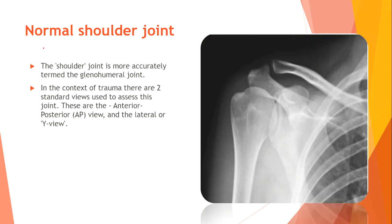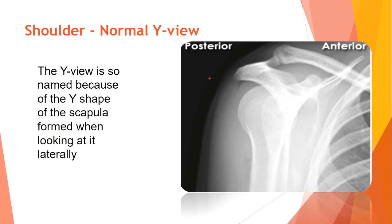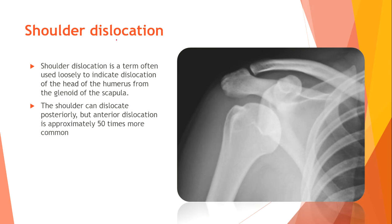Normal shoulder joint. The shoulder joint is more accurately termed the glenohumeral joint. In the context of trauma, two standard views are used: the anterior-posterior view and the lateral or Y view. The Y view is named because of the Y shape of the scapula when viewed laterally. Shoulder dislocation refers to dislocation of the head of the humerus from the glenoid of the scapula. Anterior dislocation is approximately 50 times more common than posterior dislocation.